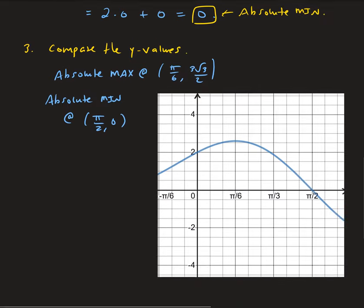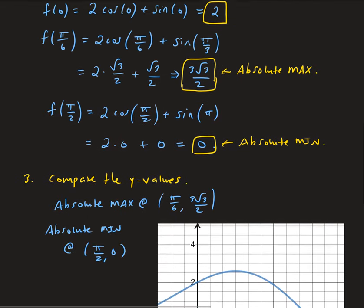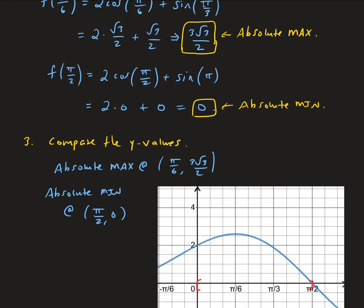Looking at the graph of the function on [0, π/2], at x = π/6 we can see the function reaches its highest point at 3√3/2 — the absolute maximum. At x = π/2 the function crosses the x-axis at 0, confirming that is the absolute minimum on this interval.